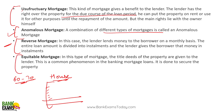Equitable mortgage: in this type of mortgage, the title deeds of the property are given to the lender. It is a very common practice — you give your property papers to the lender, and then they give you the loan. That's how they secure the loans.